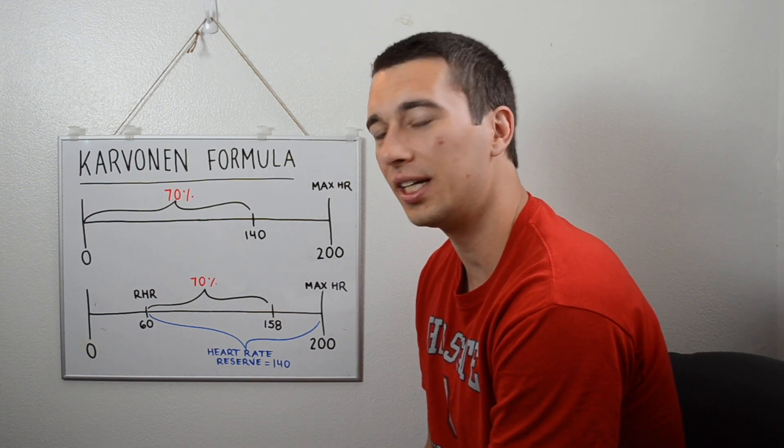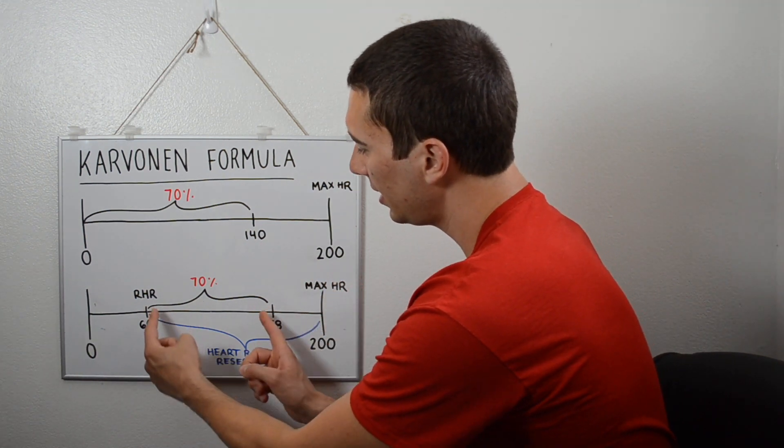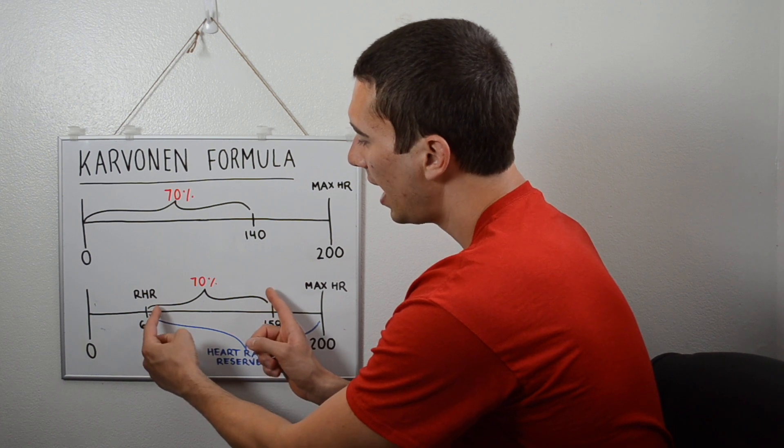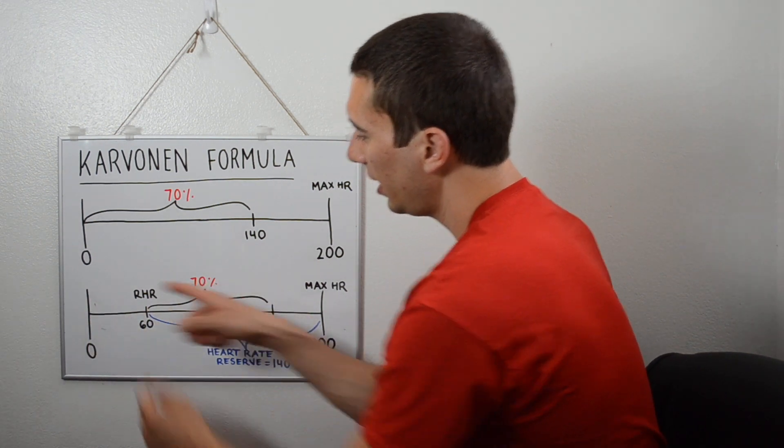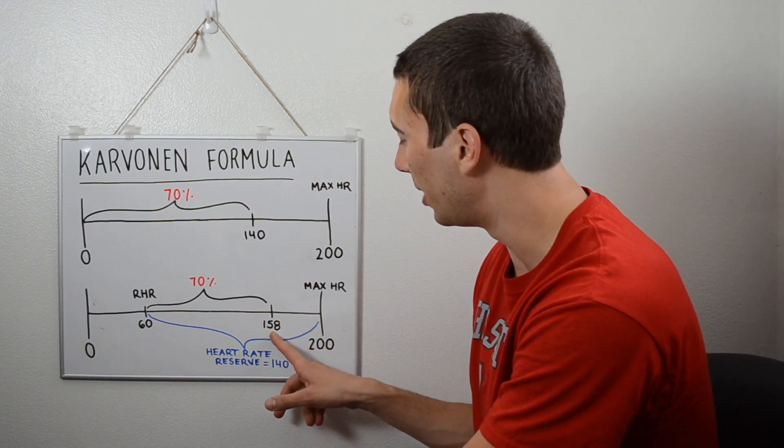All right. And so just to review that formula again, when we're thinking about the Karvonen Formula, it's heart rate reserve times intensity gets us this chunk right here. And then we have to add back on the resting heart rate to get us all the way to that target heart rate. In this case, that's 158 beats per minute.